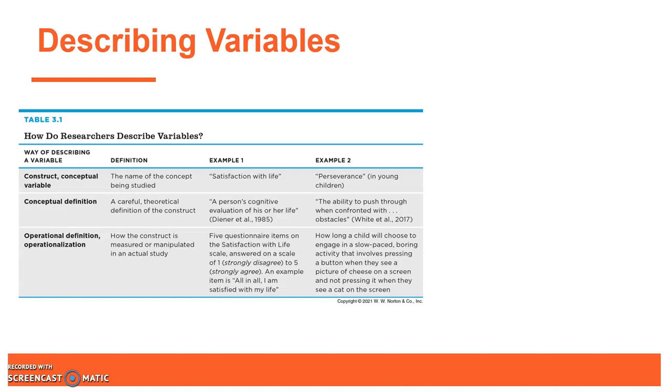You might look at survey responses. You might look at responses not of the person themselves, but somebody who observes that other person, giving a rating of how satisfied they think they are. Or you could have some more objective measure, like how often somebody reports feeling happy on social media or something like that. So there are different ways that you can operationalize that variable so that it's something that you can actually measure.